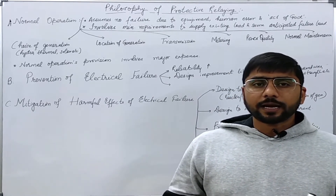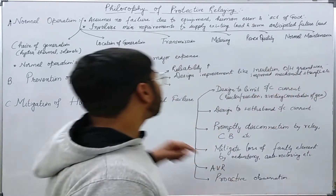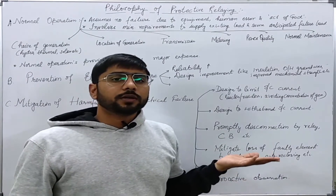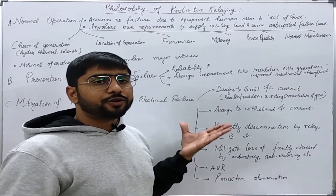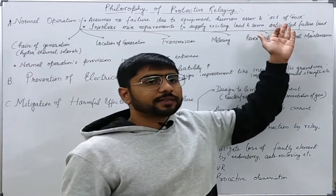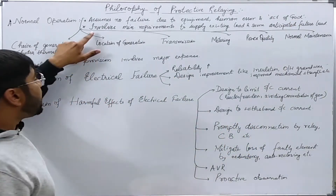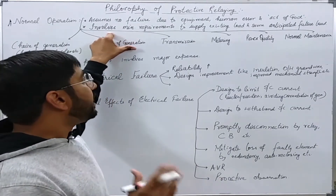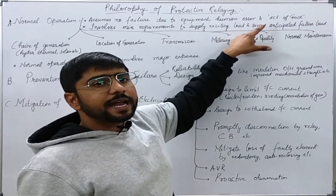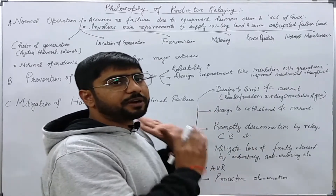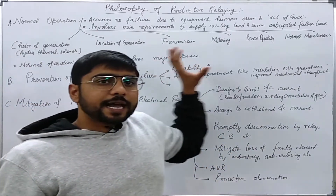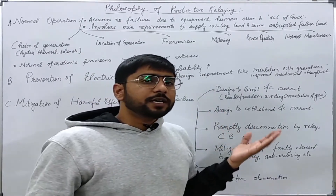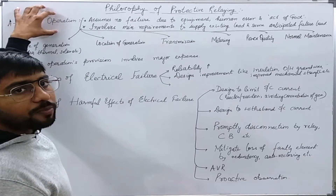There are majorly three aspects. The first one is the normal operation of a power system. In this, we usually do not assume any fault of any electrical equipment, fault due to any human error, or any act of God — like thunder, etc. It involves the design of a system which should at least cater for supplying existing load and some anticipated future load. Major portion of the expenditure is ensuring the normal operation of the power system.